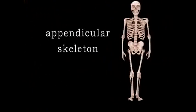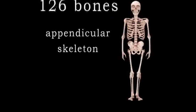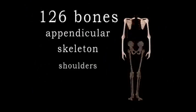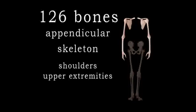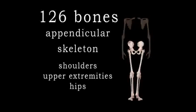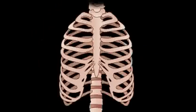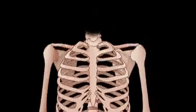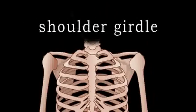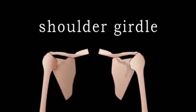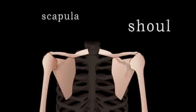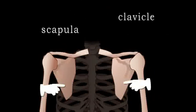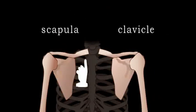The appendicular skeleton consists of the bones of the shoulders, upper extremities, hips, and lower extremities. The bones of the upper extremities, or arms, are connected to the axial skeleton via the shoulder girdle. This consists of the scapula, or shoulder blade, and the clavicle, or collarbone.